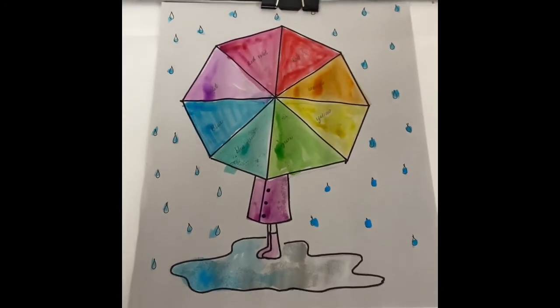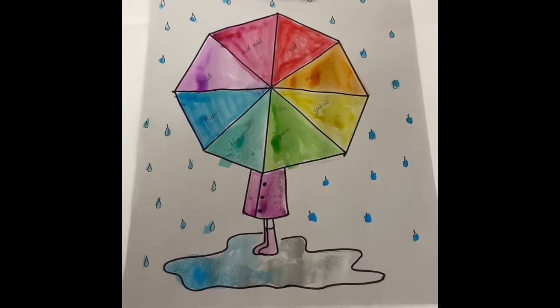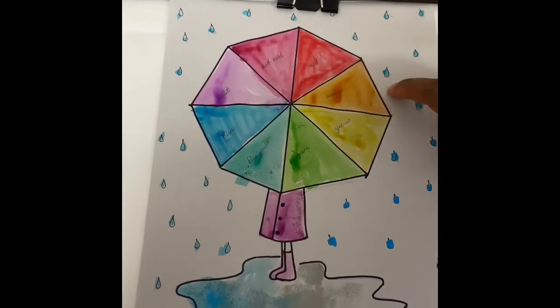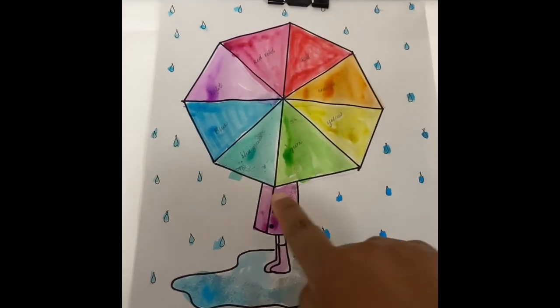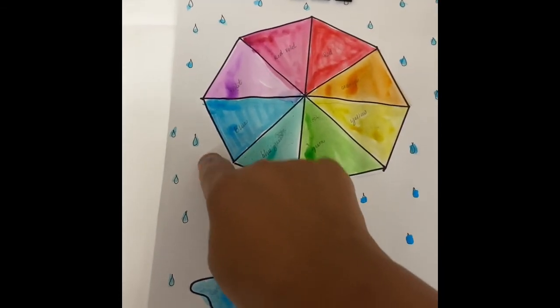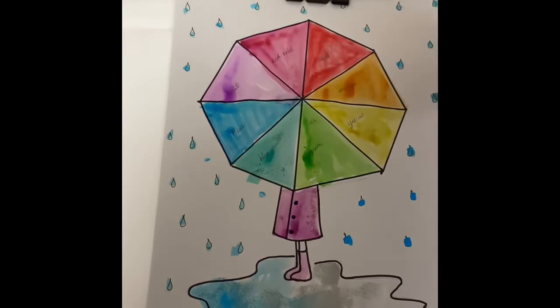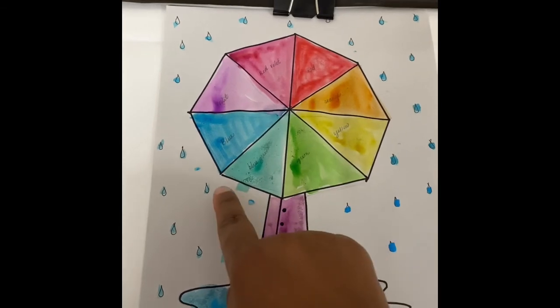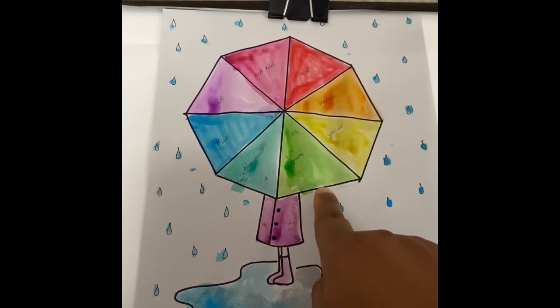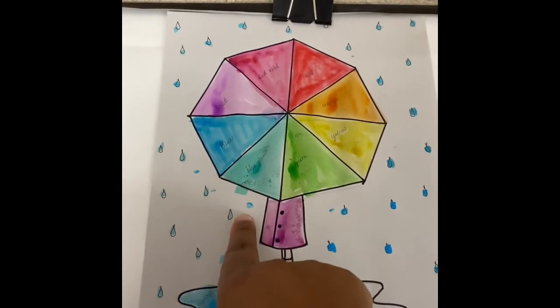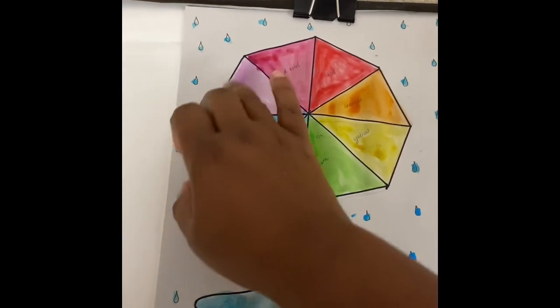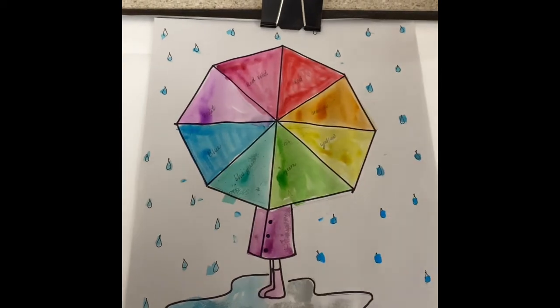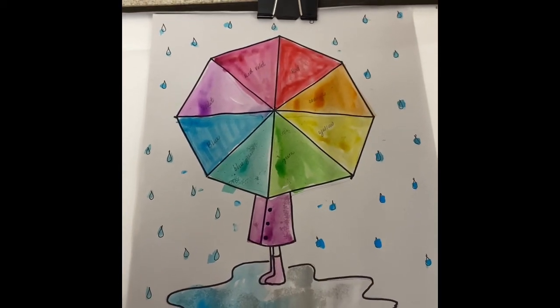There we have our umbrella color wheel. Let's review our colors: we have red, orange, yellow, green, blue green, blue, violet, red violet. Red plus yellow equals orange, yellow plus blue equals green, green plus blue equals blue green, blue plus red equals violet. Goodbye.